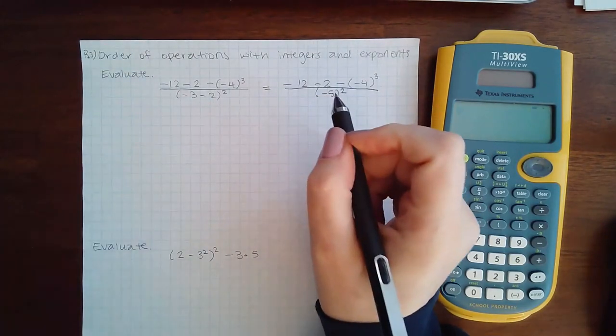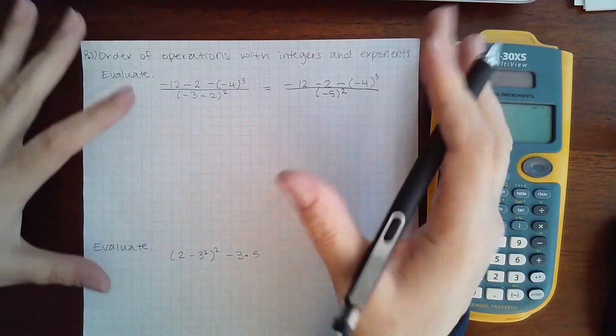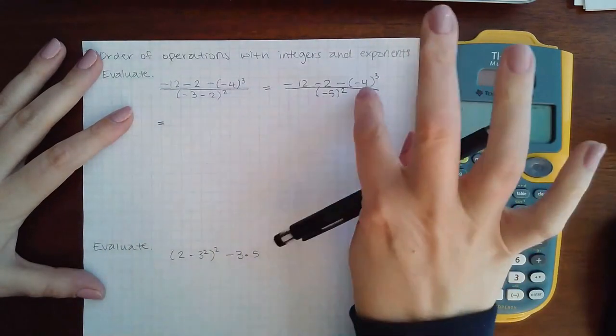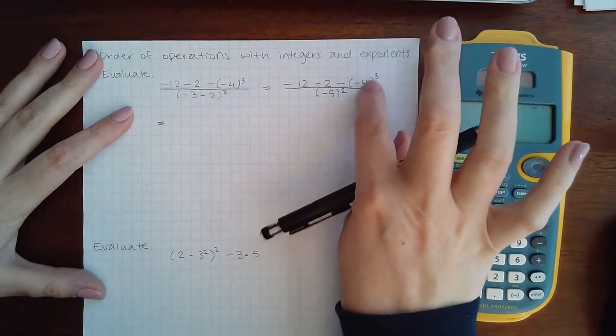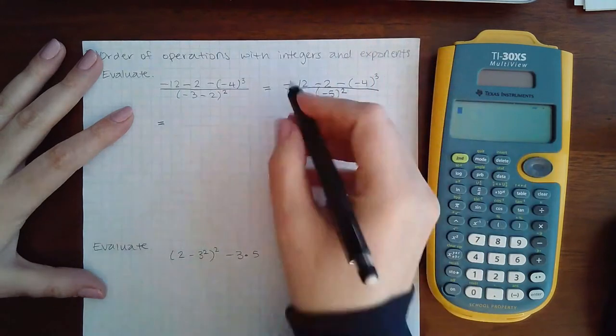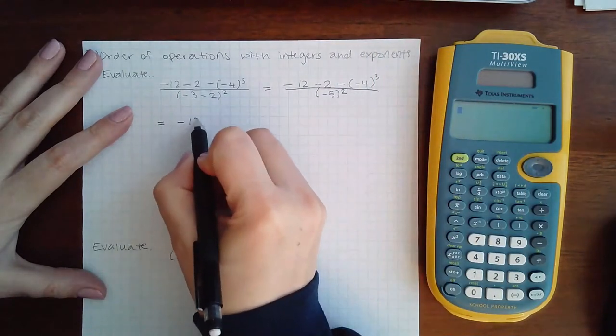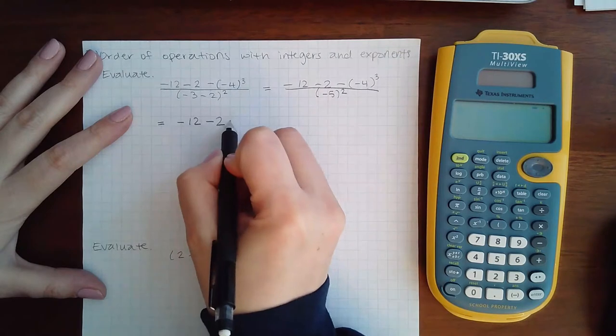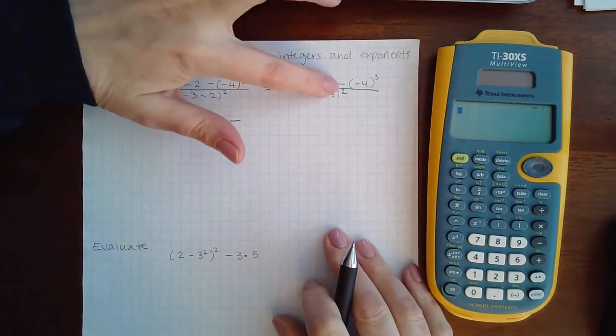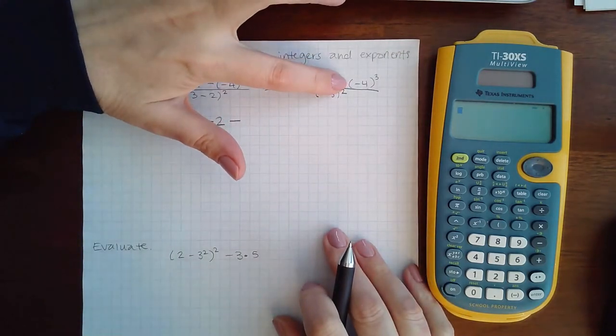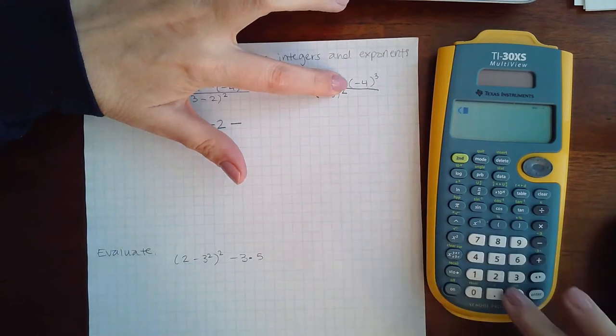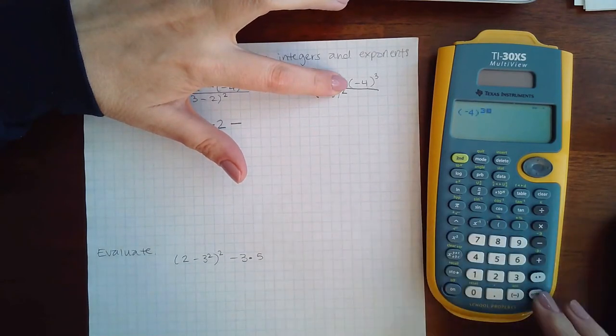Then the next step after dealing with the groups is the evaluating. So I do have to evaluate this exponent here and this exponent there. But when I do that, I'm going to have negative 12 minus 2 minus. So this minus has been spoken for. Only the parentheses negative 4 cubed is what I'm going to type in the calculator.